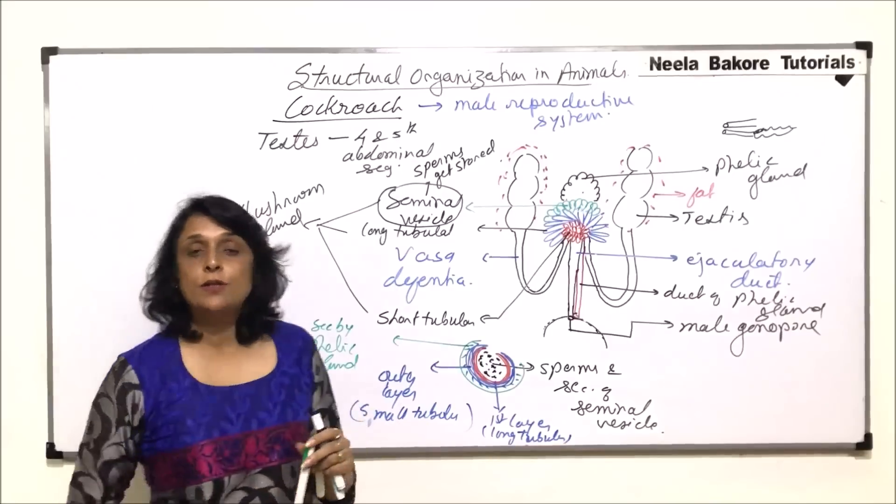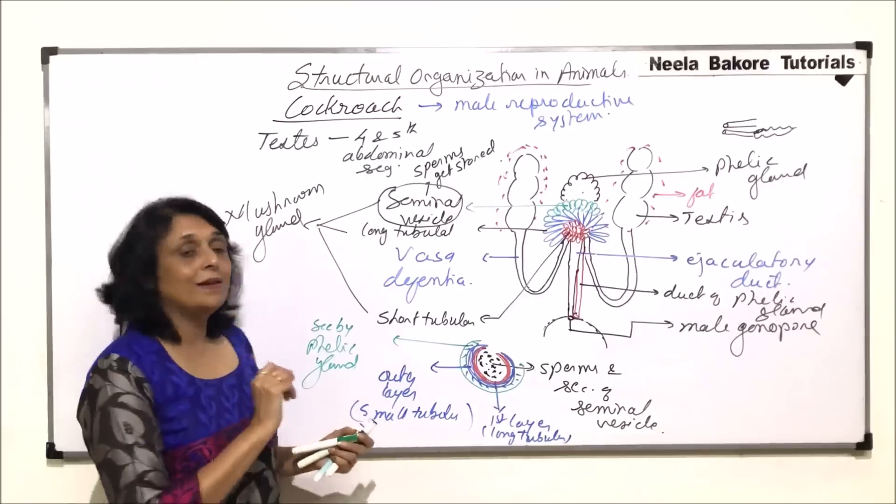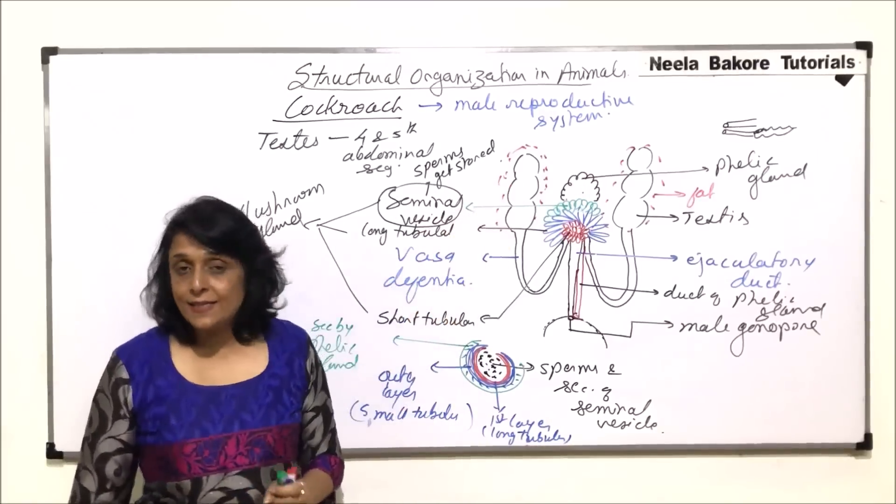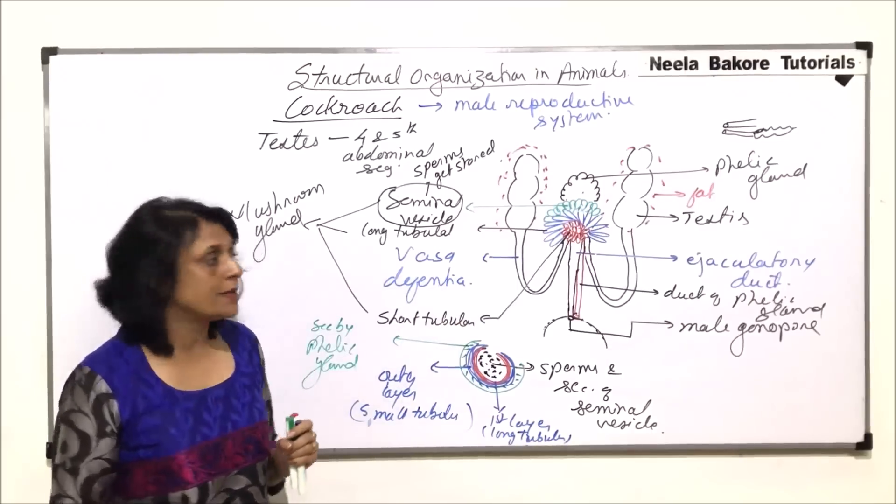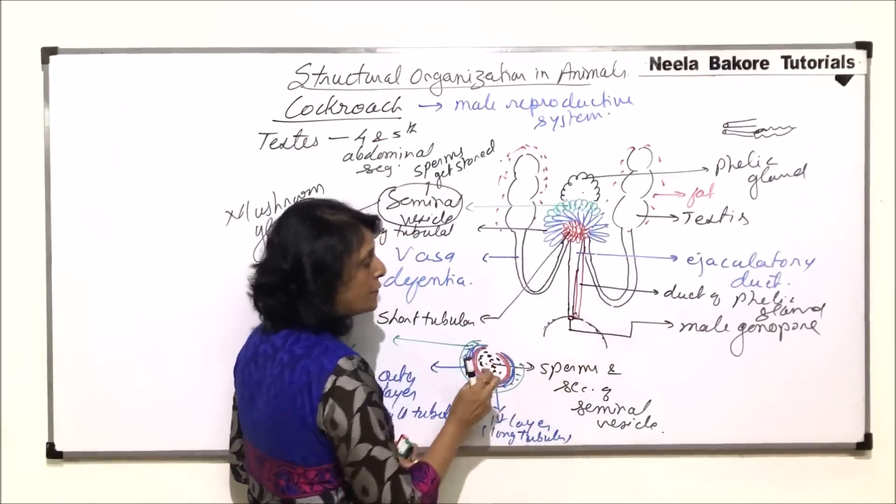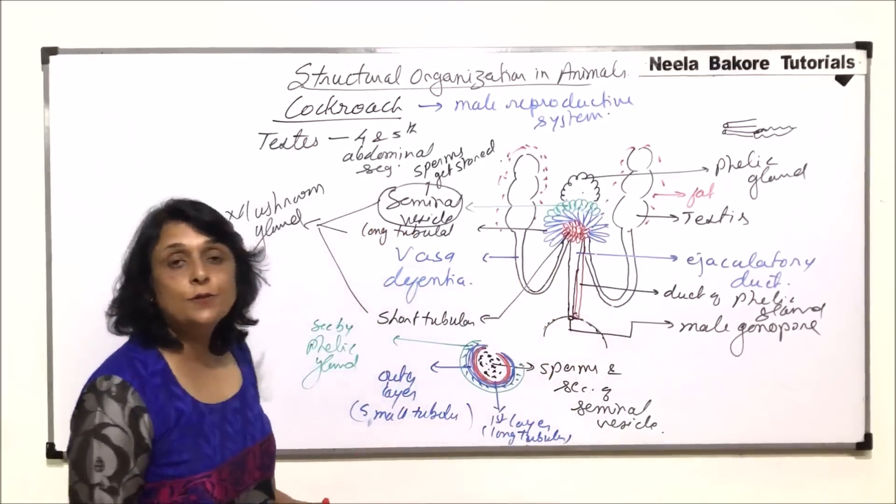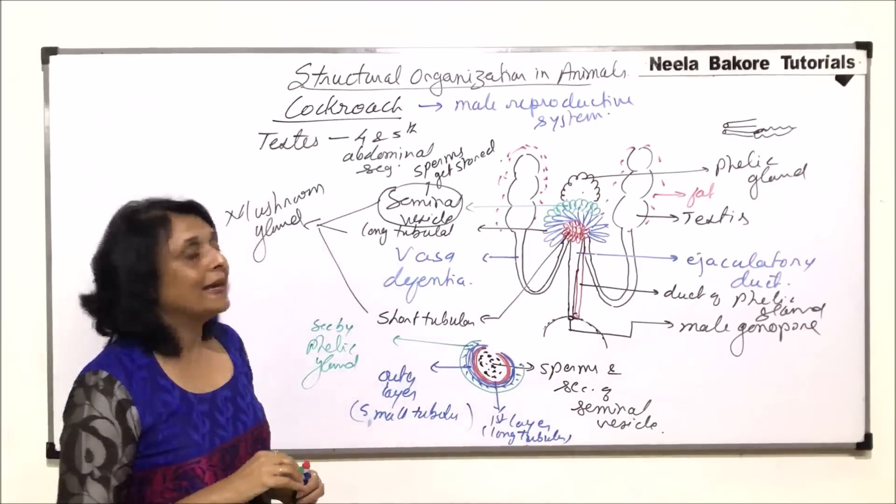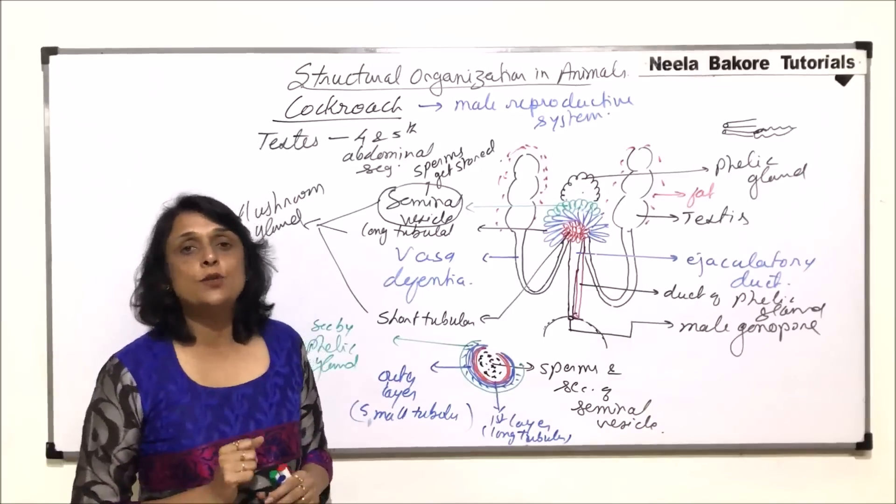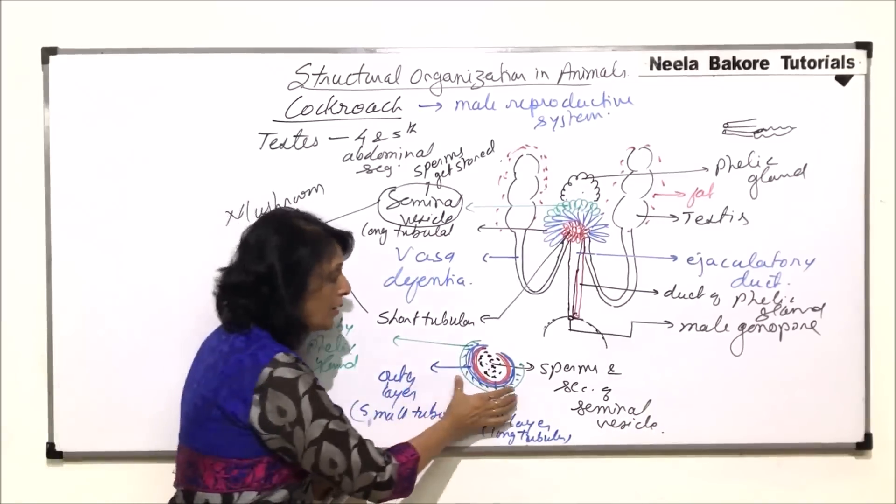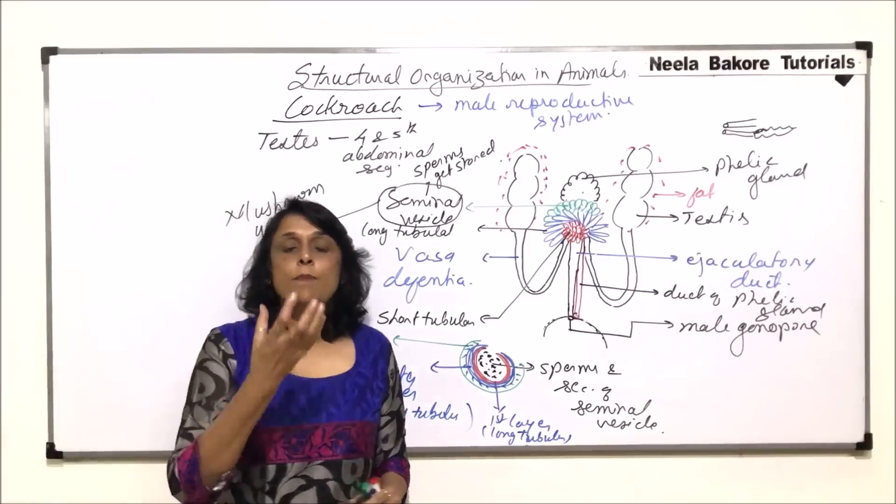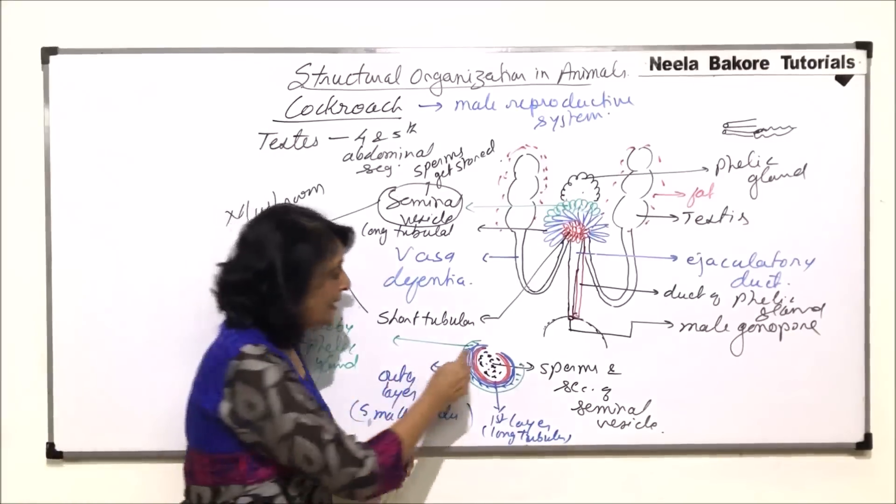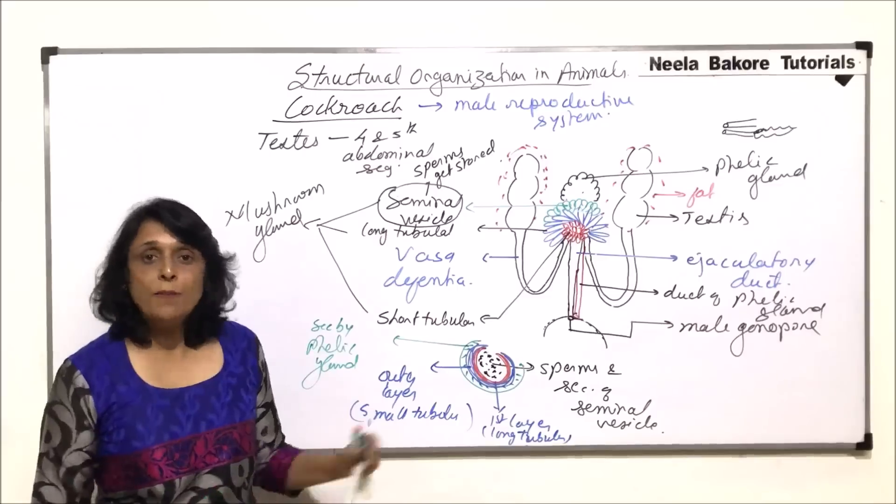So male reproductive system, the main sex organs are the testes, located in fourth, fifth abdominal segments. A paired tube, vasa deferentia, open into a common duct, which is ejaculatory duct. So there are two glands. One is a large mushroom-shaped gland, and another longish gland, which is called the phallic gland. So the secretion of these glands basically keep all the sperms together so that when the egg is released, at that time, these sperms would be released from this structure.